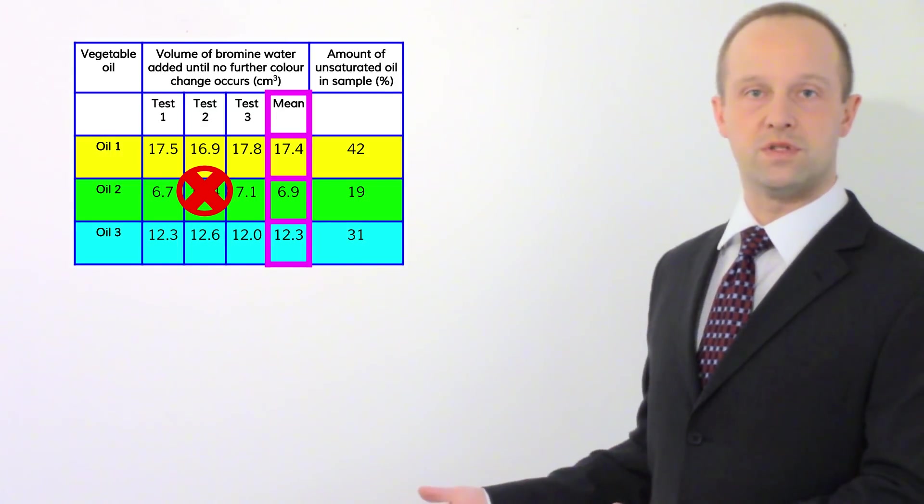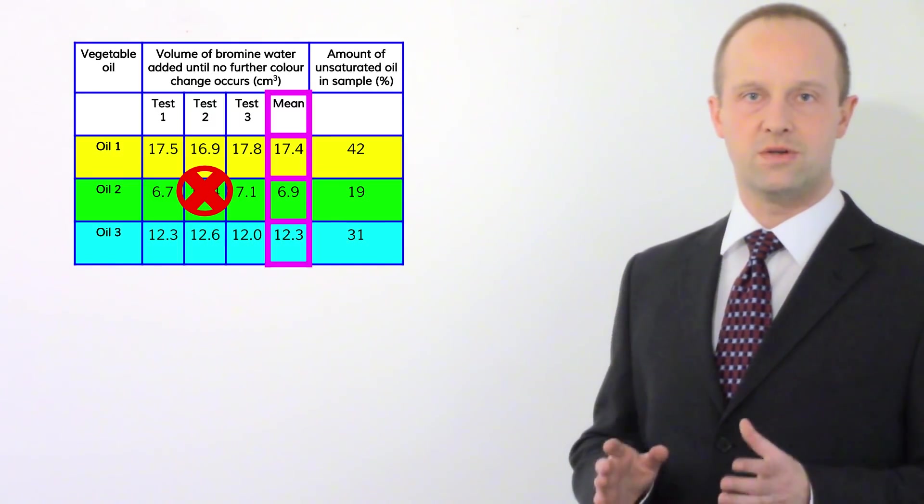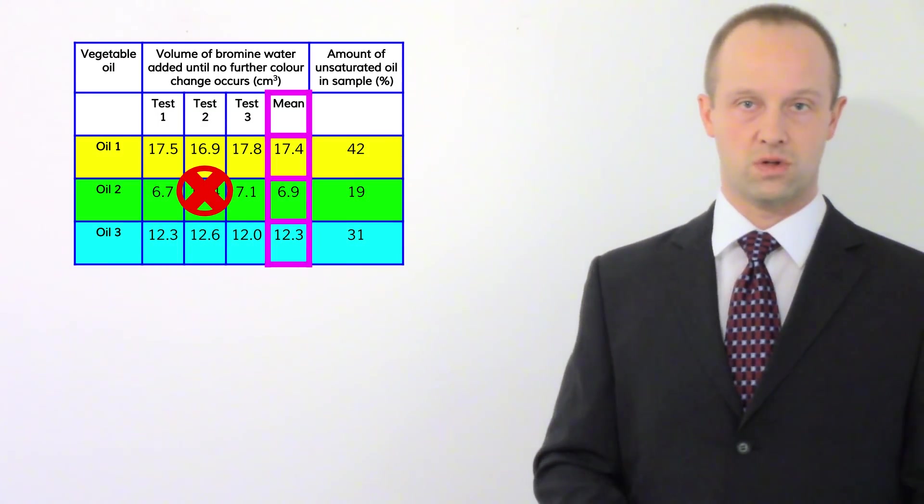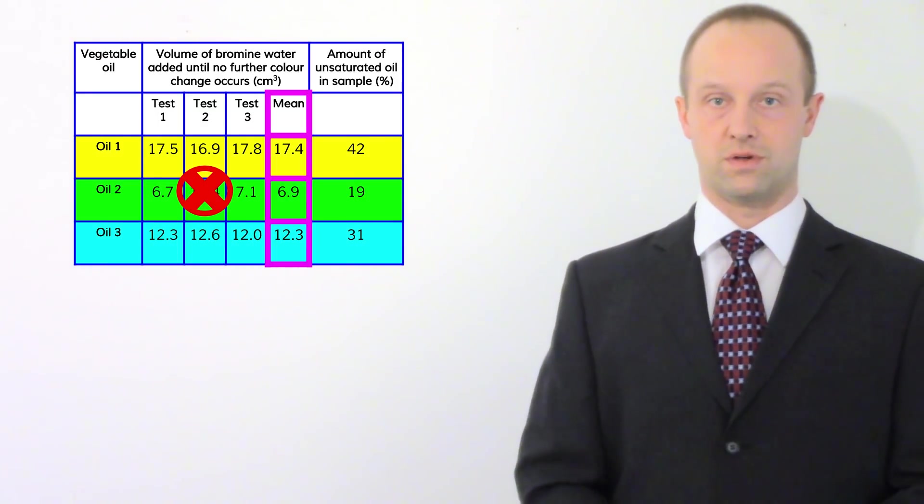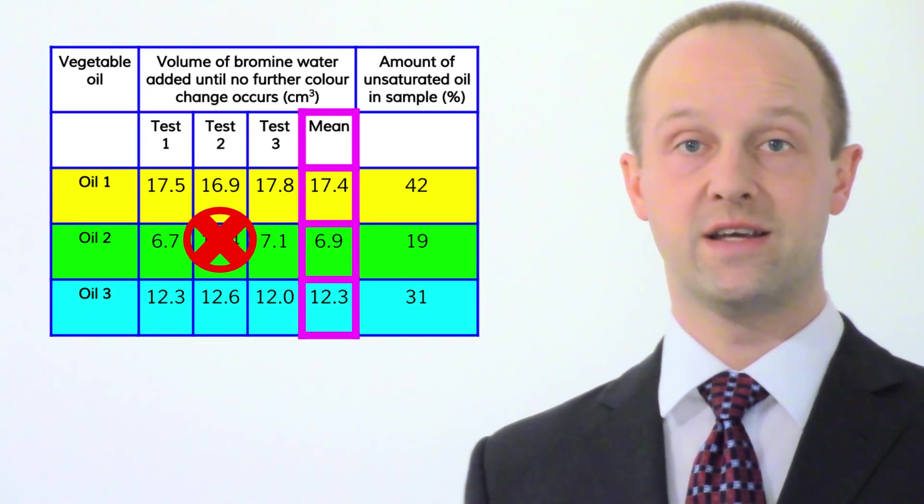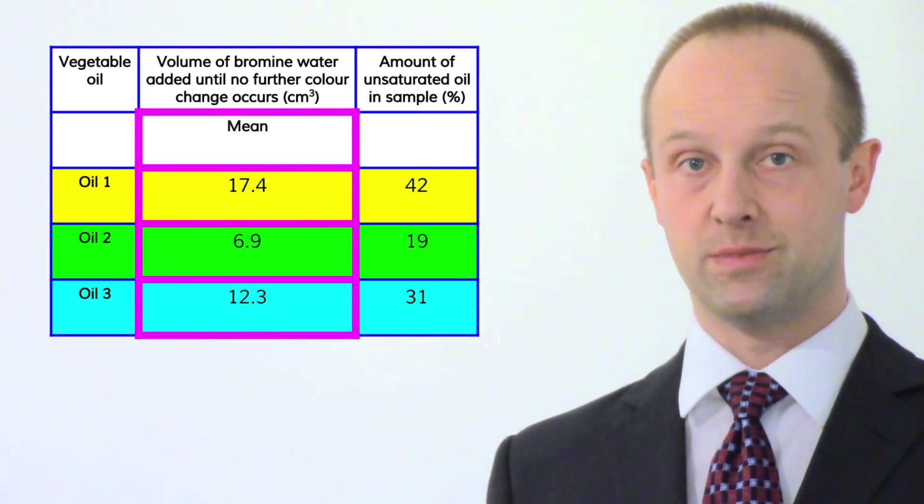So what we need to do now is describe how these means relate to the percentage of unsaturated oil in our different types of oil. Since we don't need the raw data let's get rid of it. We can totally ignore it so let me just remove that from this table.